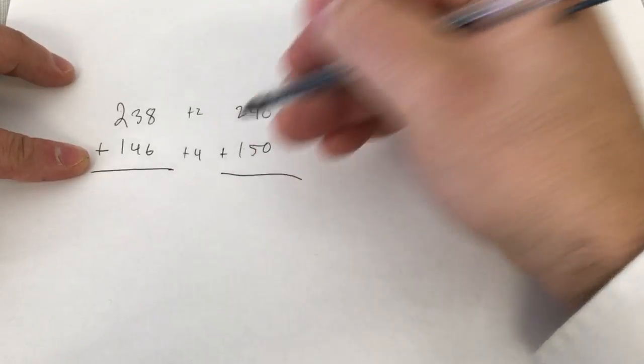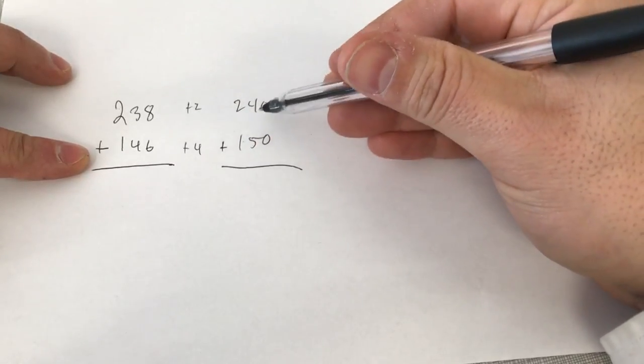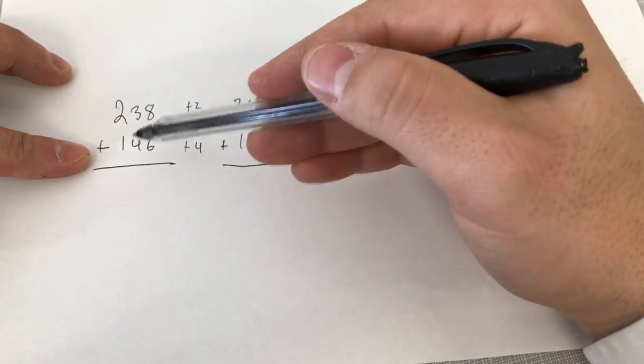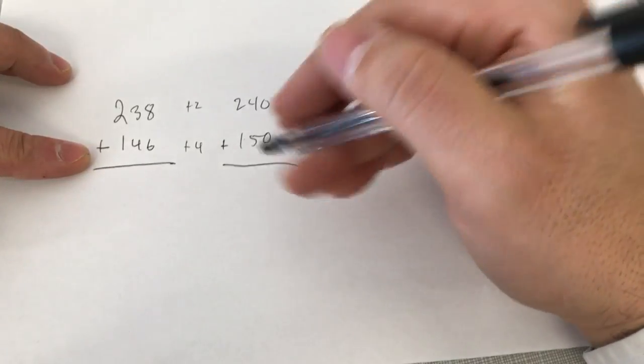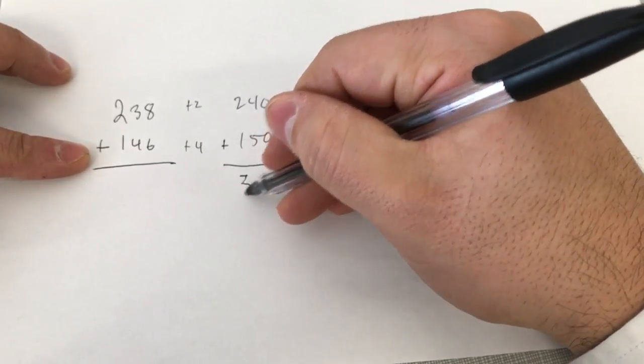Now what you're going to do is add these rounded numbers together. These are easier to add than the original numbers. So 240 plus 150 is going to give you 390.